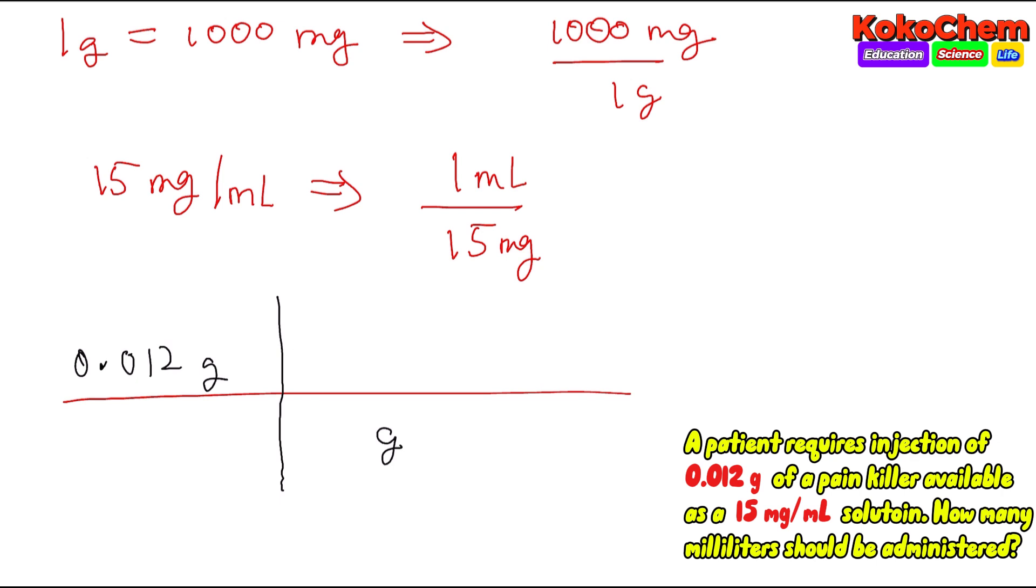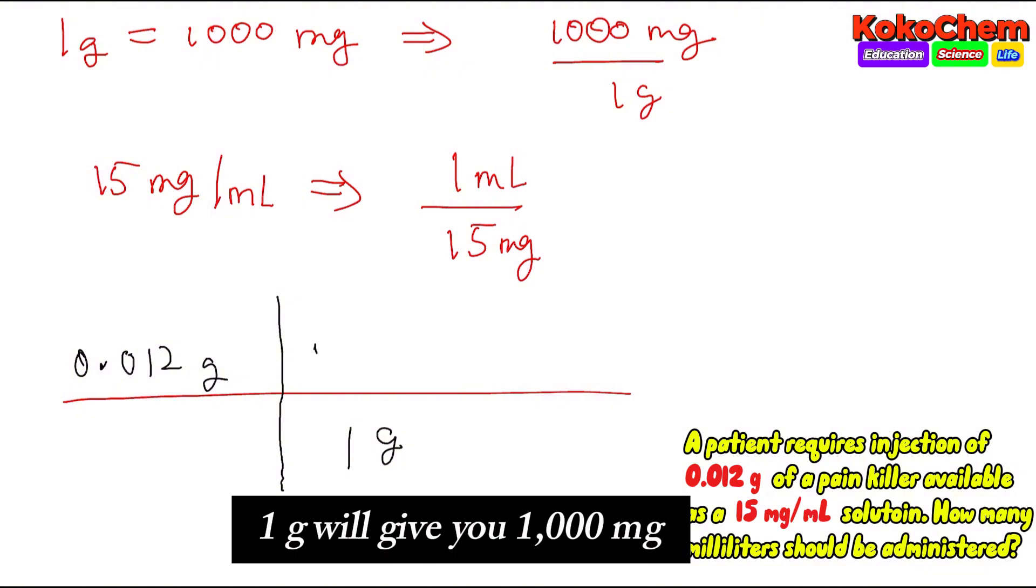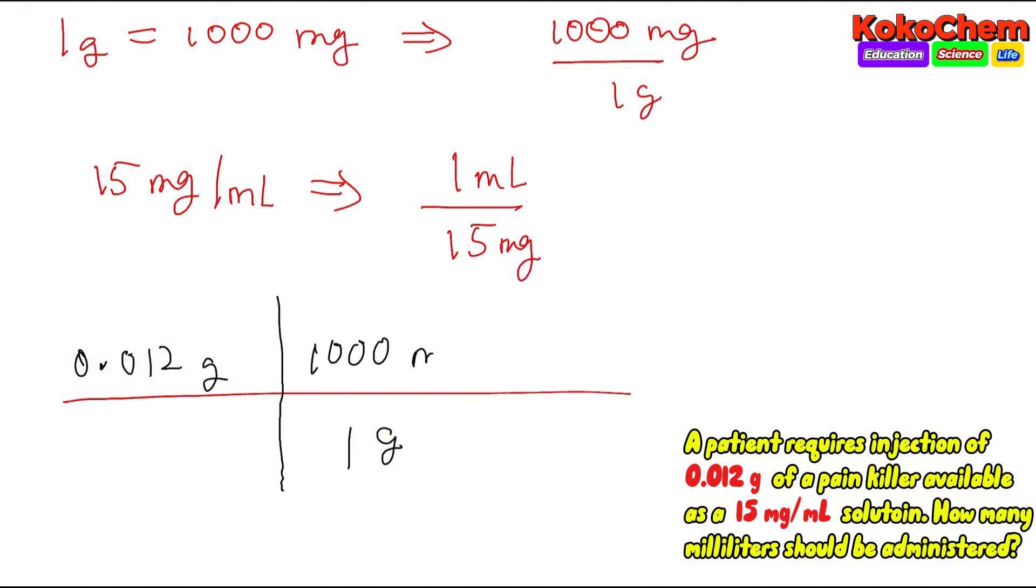The conversion here: one gram will give you one thousand milligrams. Grams will cancel and we get milligrams. Now we need to convert milligrams to milliliters.